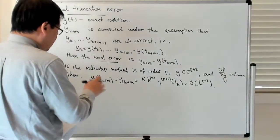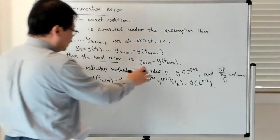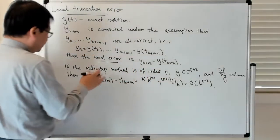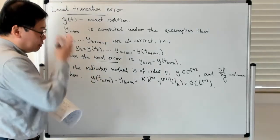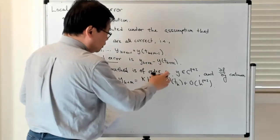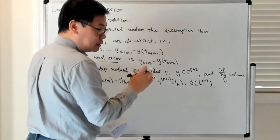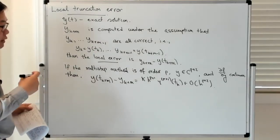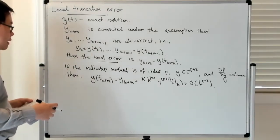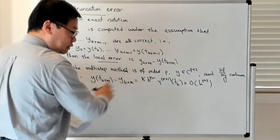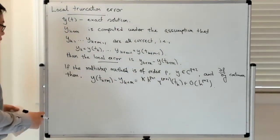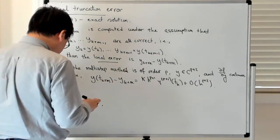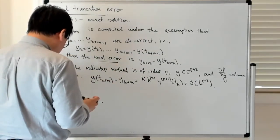So let's prove this. The reason why that's not an obvious statement is because when we talked about the multi-step method, we said the method is order p if the residual error — when you substitute the exact solution into the defining equation for the multi-step method — is order h^(p+1), as opposed to this other way of thinking about it in terms of local truncation error. So let's see that they are indeed equivalent notions.